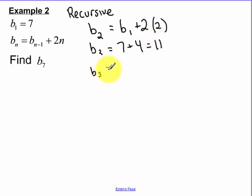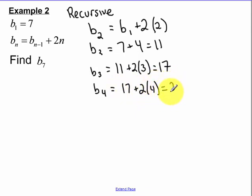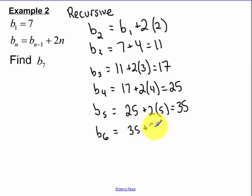My third term, I use my previous term plus twice N, which in this case is 3. I get 17. My fourth term, I take my previous term plus 2 times 4, which is 25. And we keep going through and doing this. 2 times 6, and we get 47.